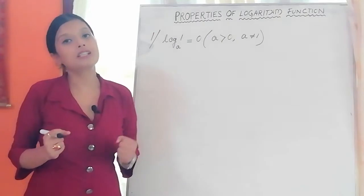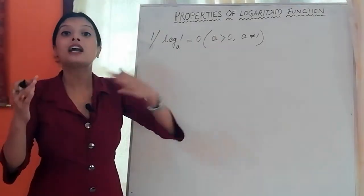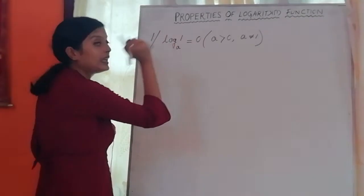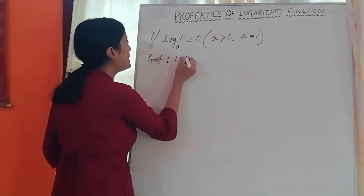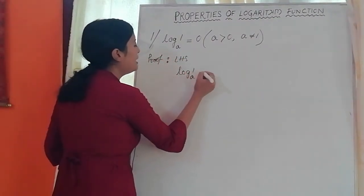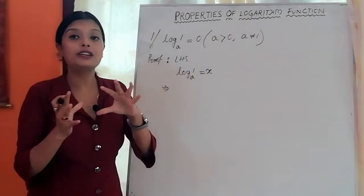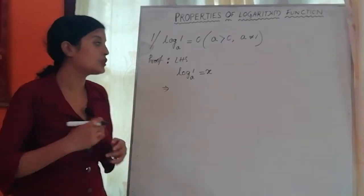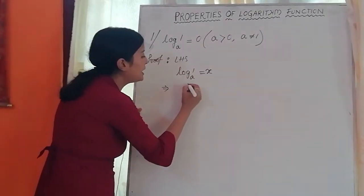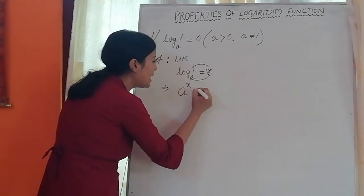I will write the left-hand side of the proof. The left-hand side is log 1 base a. I will denote this as x. Now, using the definition of logarithm as the inverse of the exponential function, I convert to exponential format. This means a to the power x equals 1.